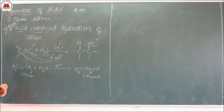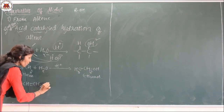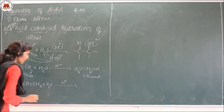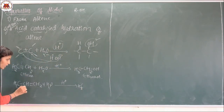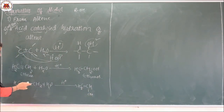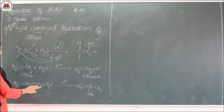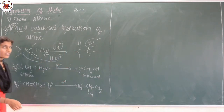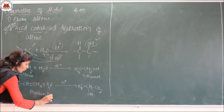This is a symmetrical alkene. If we take an unsymmetrical alkene, how is the product observed? Take any unsymmetrical alkene for example. When it undergoes acid catalyzed hydration, we add H to one carbon and OH to the other. The double bond is broken, a single bond is formed, and one H is added. This product is based on Markovnikov's rule.